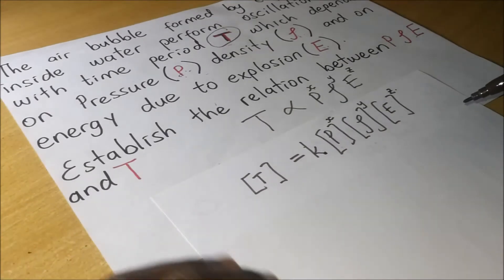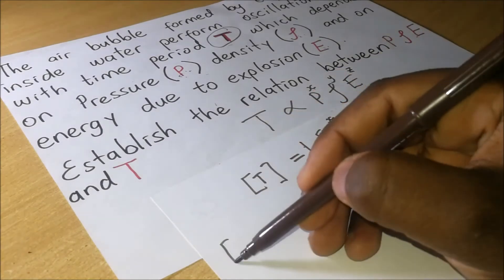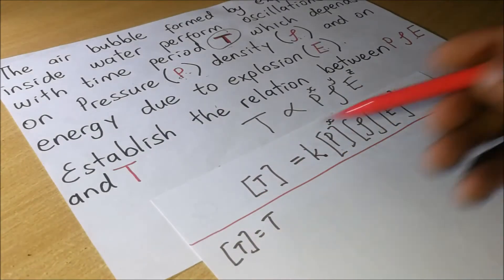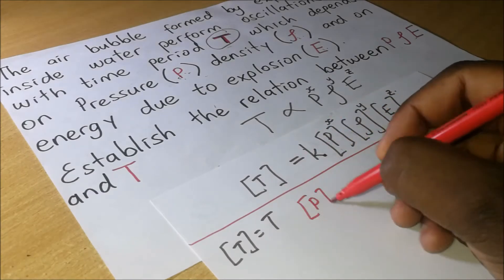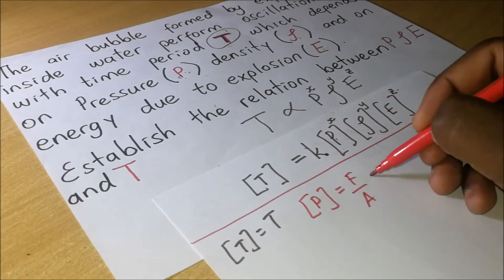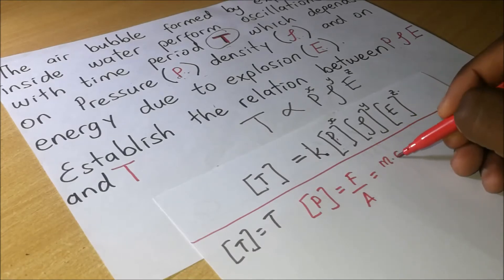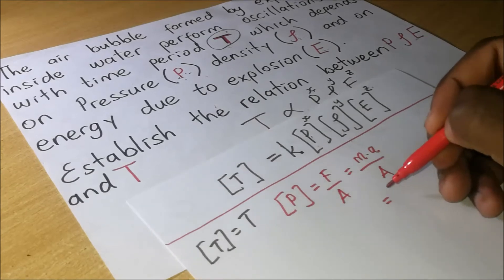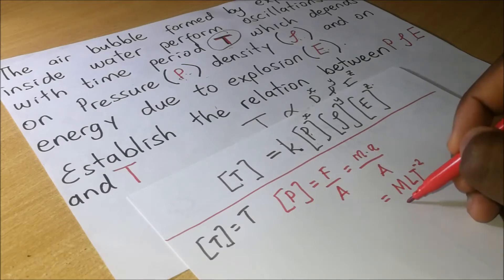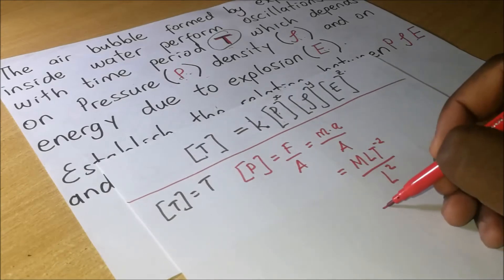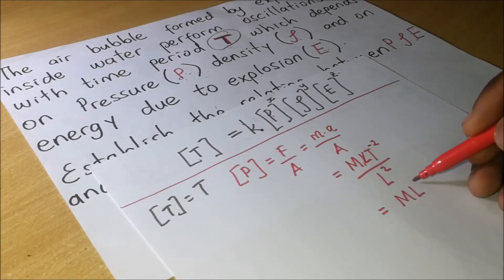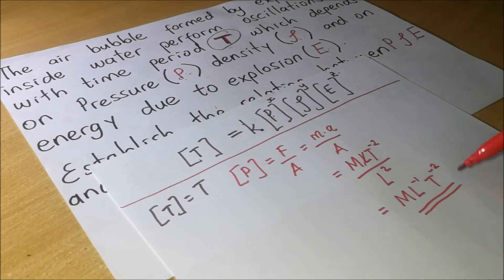The dimensions of T are simply capital T (time). Now, the dimensions of pressure P: pressure is force over area. Force is mass times acceleration, divided by area. Mass is M, acceleration is LT⁻², divided by area L². One L cancels, giving dimensions of pressure as ML⁻¹T⁻².